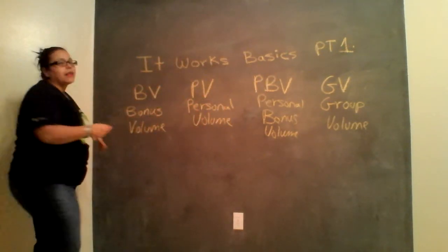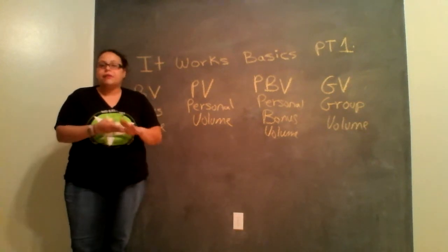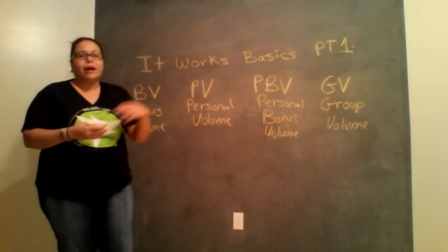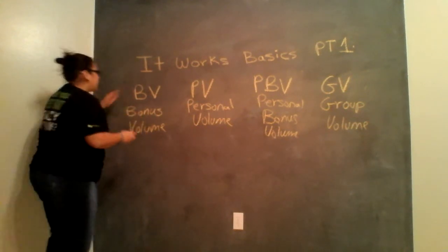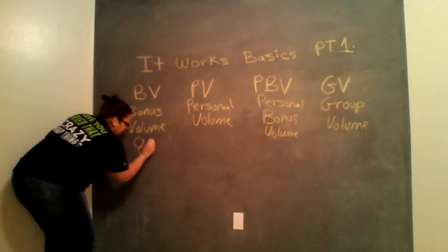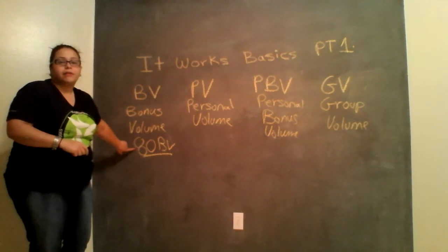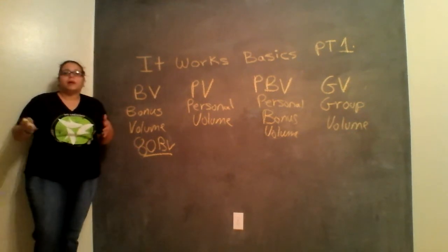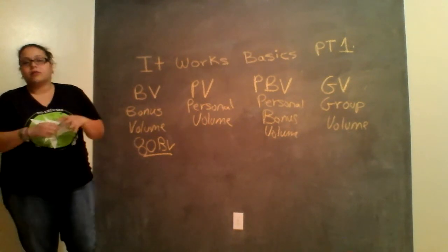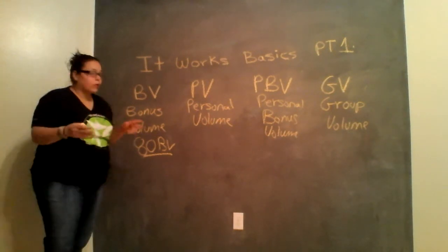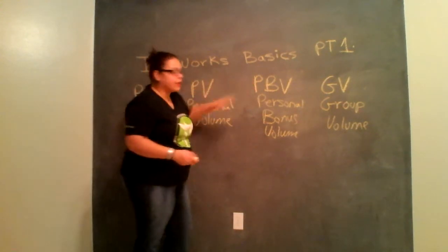So when they say that in order to be qualified, you need either an 80 PV auto-ship or 400 in your PBV. It means that you either need a qualified order or an auto-ship of 80 PV. So I recommend people getting two boxes of wraps when you're starting up. That's your main product that's going to be sold anywhere and everywhere. Or you're going to need 400 in PBV.